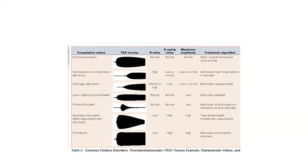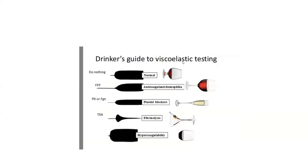These graph shapes also correspond to a beverage glass analogy — useful for remembering them. A normal TEG looks like a normal glass. A wine glass shape — where it's taking too long — means FFP is needed. A champagne flute — formed but not strong enough — means platelets are needed. A martini glass shape — where the clot starts to disappear too soon — means TXA is indicated.